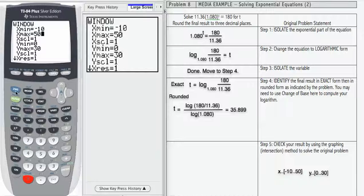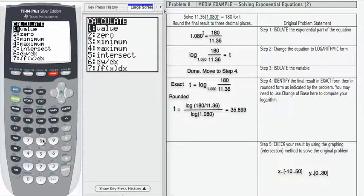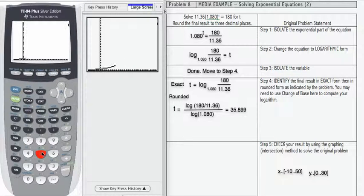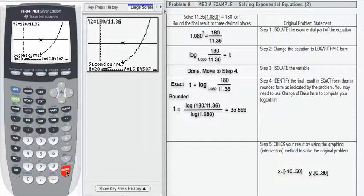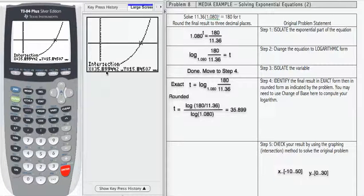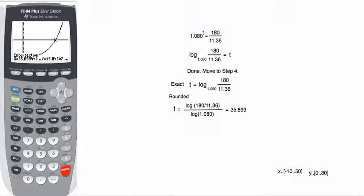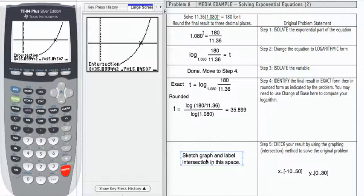Let's go ahead to 2nd calc number 5 and that's going to graph for us. There's the exponential part, there's the 180 over 11.36. I'm going to answer my three questions to find the intersection. 35.899 is indeed the right result. In the space that's labeled here on the table, you should sketch the graph and label the intersection. We have our check.